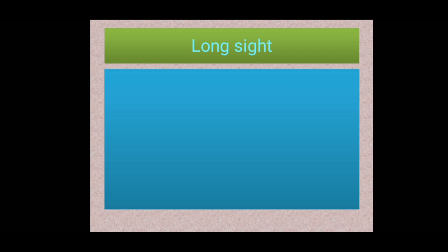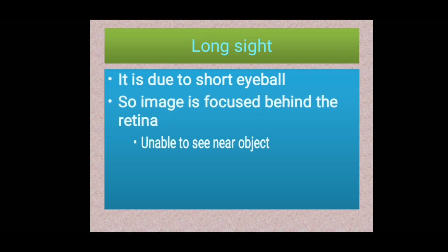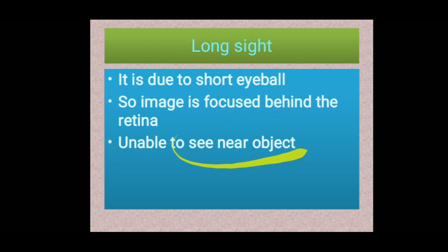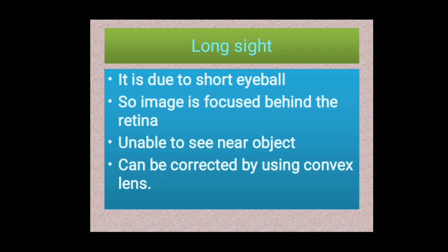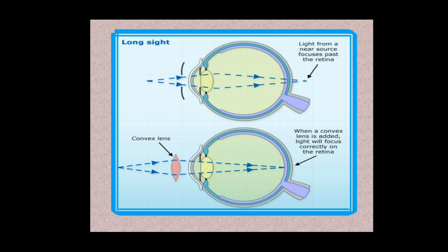The next defect is long sight, also known as hypermetropia. The defect is due to a short eyeball and a flatter cornea than normal. The image is focused behind the retina, so the person is unable to see near objects. Long sight means the person can see only distant objects clearly and cannot see near objects. It can be corrected by using a convex lens, which helps focus the image on the retina.